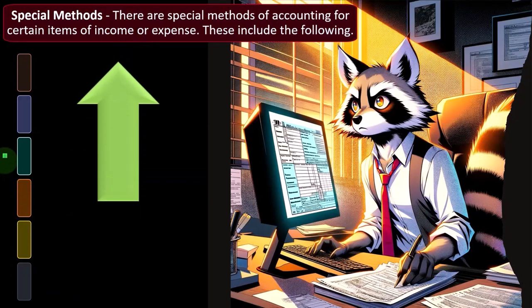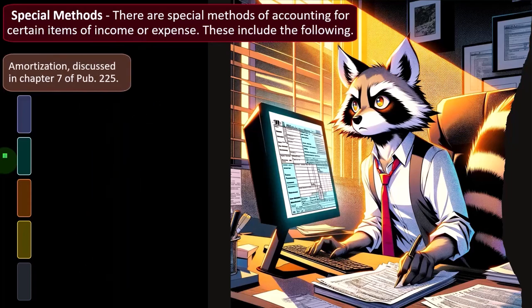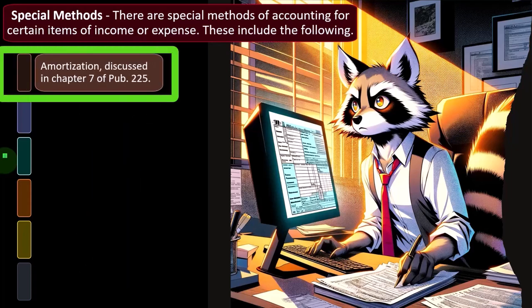So, special methods. There are special methods of accounting for certain items of income or expense. These include amortization, discussed in chapter seven. We'll get into depreciation and types of assets later. Amortization and depreciation follow their own rules, which are basically separate from what you might expect. You might expect the tax code to default to generally accepted accounting principles, and they kind of do that — but then they deviate from that for other reasons.